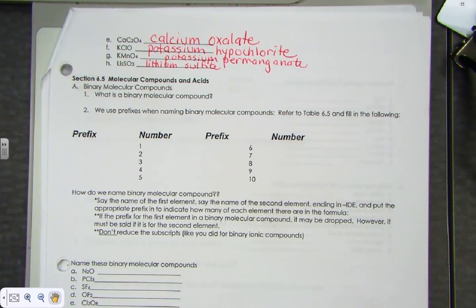We had just finished writing ternary ionic compounds: CaC2O4 called calcium oxalate, KCLO potassium hypochlorite, KMnO4 potassium permanganate, and lithium sulfite Li2SO3. That way for sure you know that you've got your answers correct and are ready to start the next new lesson.